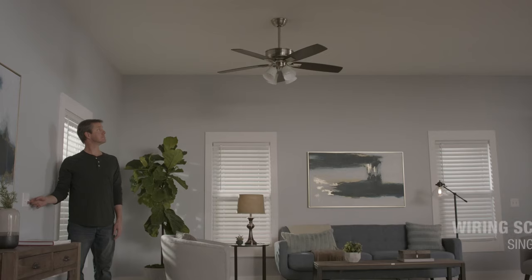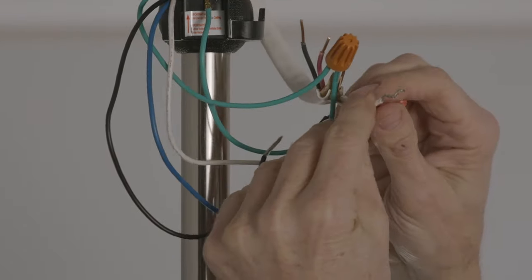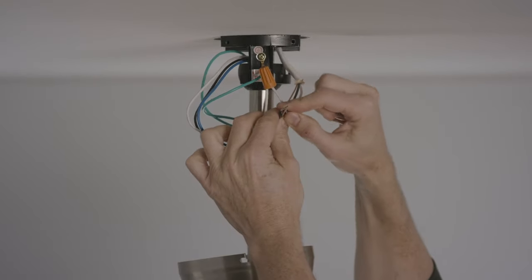A third scenario is using one switch to control both the light and the fan simultaneously. Here you would connect green to grounding, white to white, then connect both the fan's black and blue wires to the house's black wire.